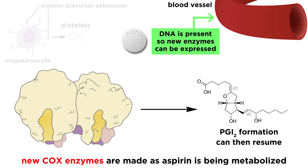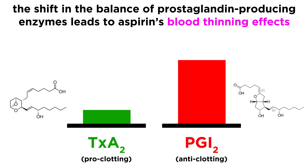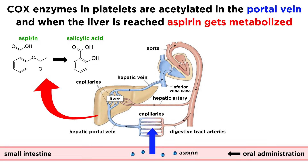Cells lining the blood vessels, however, continually generate new COX enzymes, and thus can still generate anti-clotting prostaglandins. This shift in the balance of pro- and anti-clotting compounds is what leads to aspirin's blood-thinning effects. This is a cumulative effect of multiple low doses of aspirin, because COX enzymes in platelets are acetylated within the portal vein, which carries blood from the gut where aspirin is absorbed, to the liver where aspirin is rapidly metabolized into salicylic acid.